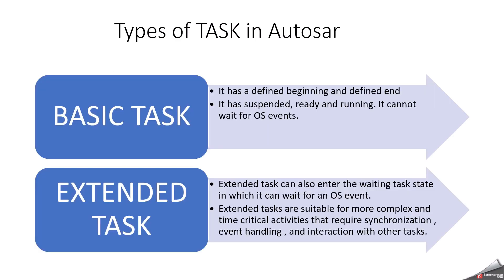Now we can discuss the types of tasks in the Autosar architecture. Basically, we have two kinds of tasks: one is a basic task and the other is an extended task. A basic task — as the name suggests — has a defined beginning and a defined end. It does not have a waiting state. It has only suspended, ready, and running states. It cannot wait for OS events. That is called a basic task.